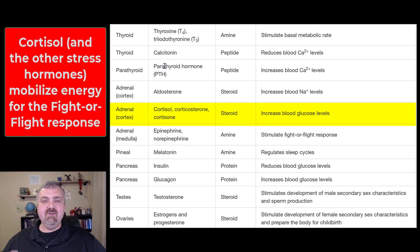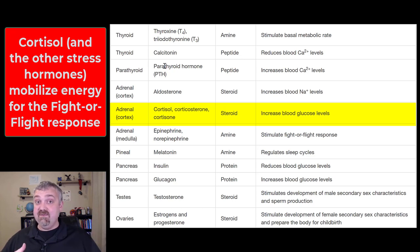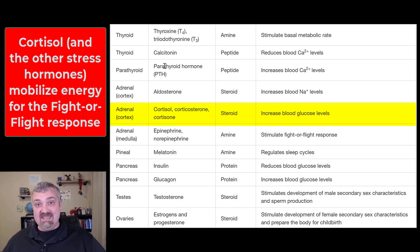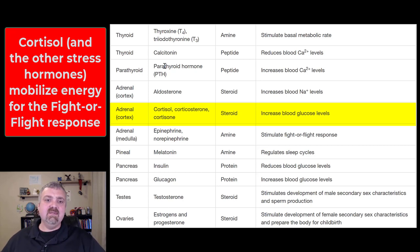The adrenal cortex also produces stress hormones. Cortisol is the main one, but you also have corticosterone and cortisone. Their job is to mobilize energy. When you're under stress, your body thinks you should be fighting or fleeing. Cortisol's job is to bring your blood sugar up, which is why stress hormones break down body tissues and increase blood sugar. These effects aren't negative in the short term if you need to fight or flee, but they are negative long term.